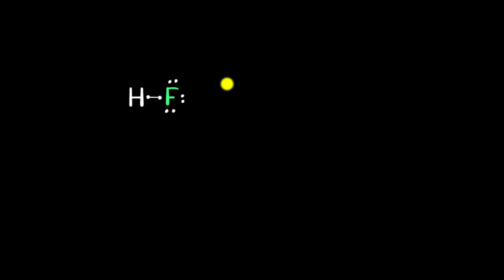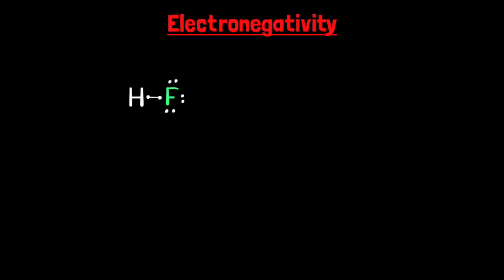But first, let's quickly recap the ideas of covalent bonds and electronegativities. Consider hydrogen fluoride: both hydrogen and fluorine are going to share one electron each, because by sharing these electrons their outer shell gets completely filled. This is what we call a covalent bond. But are these shared electrons spending equal amounts of time with hydrogen and fluorine?